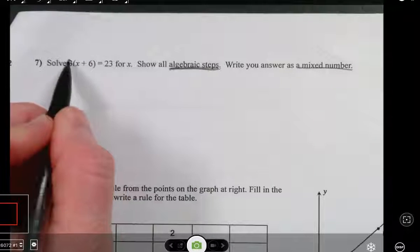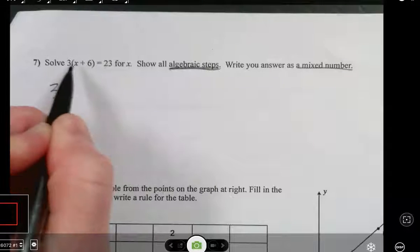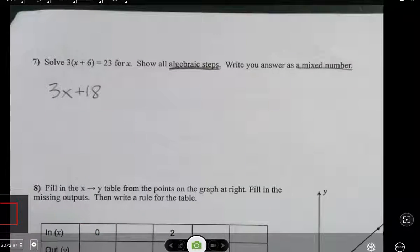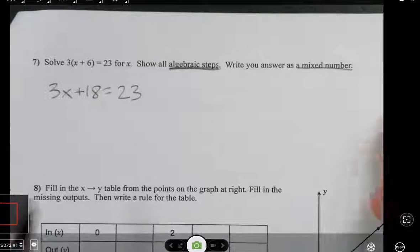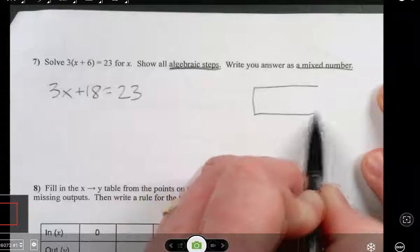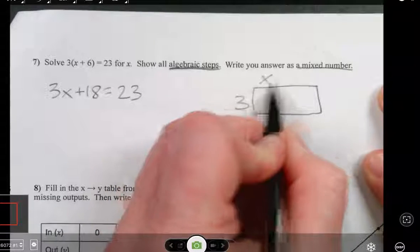So we have 3 times x and 3 times 6. Remember the box method you guys? The generic rectangle? We had 3x plus 6.